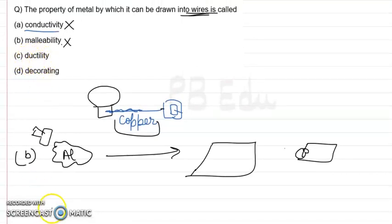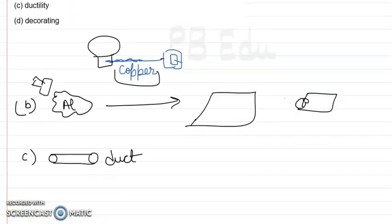The next is ductility. Ductility comes from duct, which means a pipe-type thing. Ductility is the property by which a metal, if we talk about copper, can be drawn into wires. These wires can be used to conduct electricity.